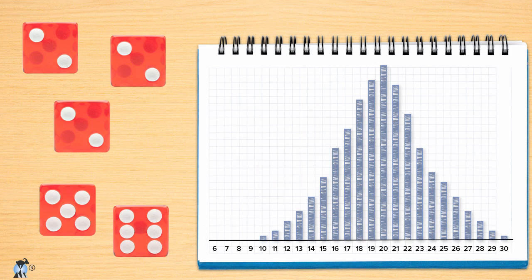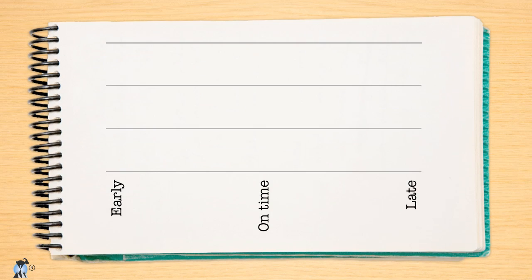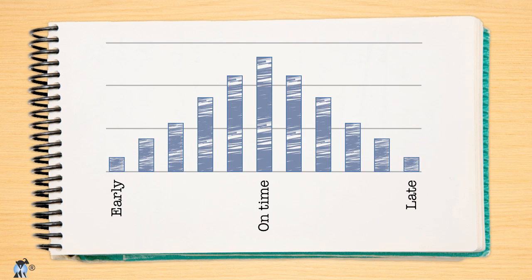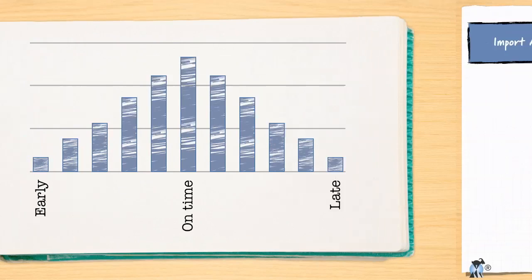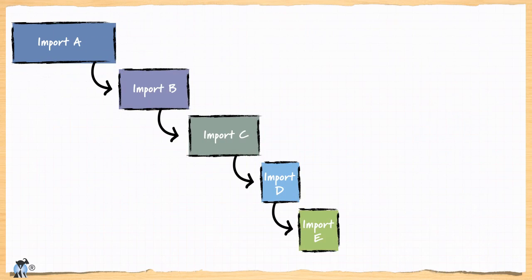Now let's apply this to software projects. Instead of graphing the value on five dice, let's graph whether software tasks are finished early or late. We'd like to think we'd see the same shape to our graph, and the central limit theorem tells us we will — if each of the tasks is independent. Here's part of a Gantt chart from a project I consulted on a few years back. Each of these boxes represents a task to import data from a particular file format into the system that this team was building.